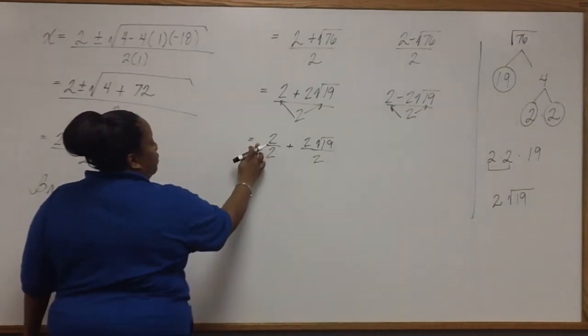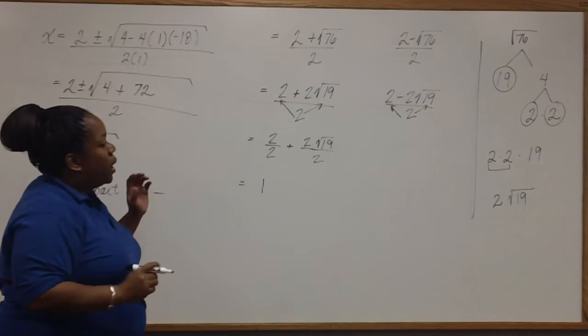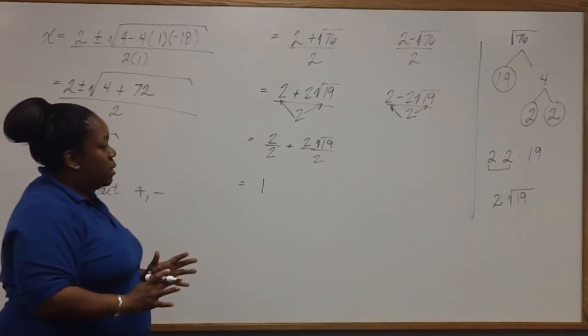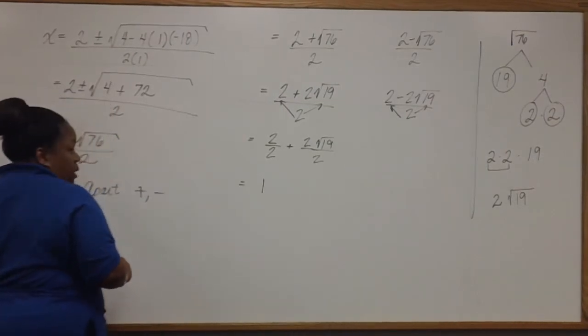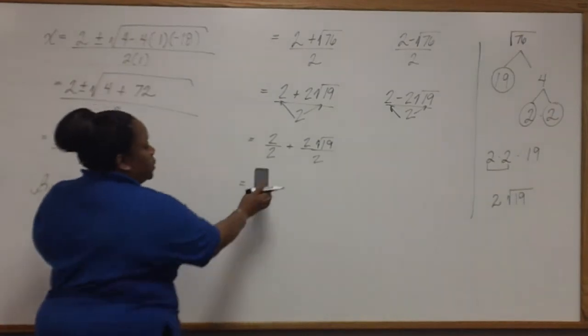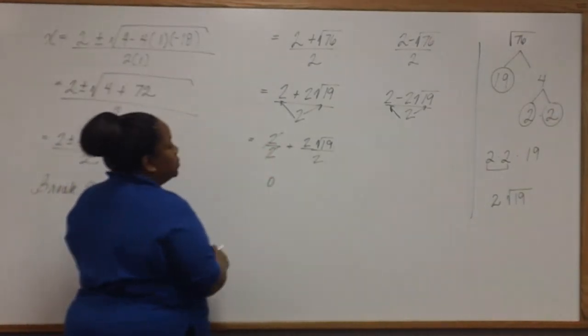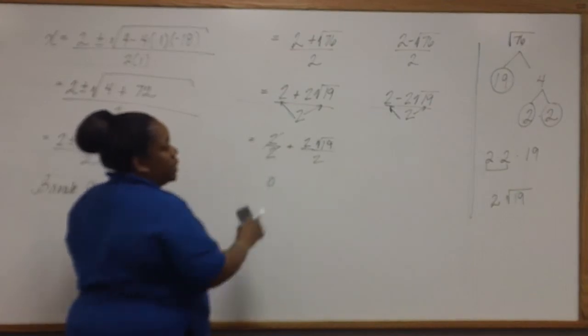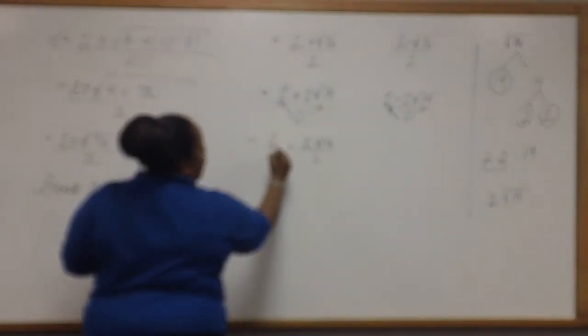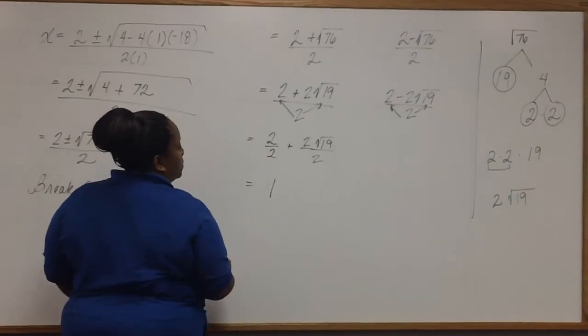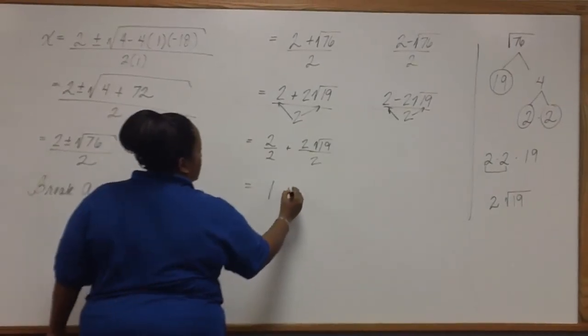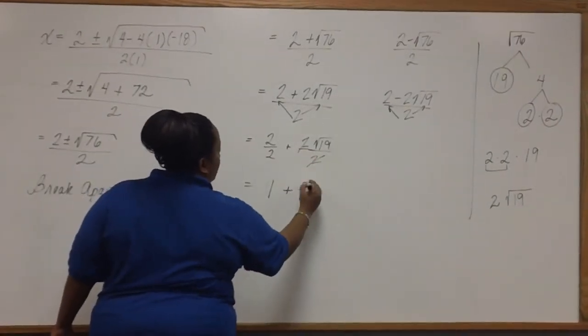Now 2 divided by 2 is 1. What I've seen students do in the past, they'll just do this and think that it's 0. 2 divided by 2 is not 0. 2 divided by 2 is 1. Plus square root of 19.